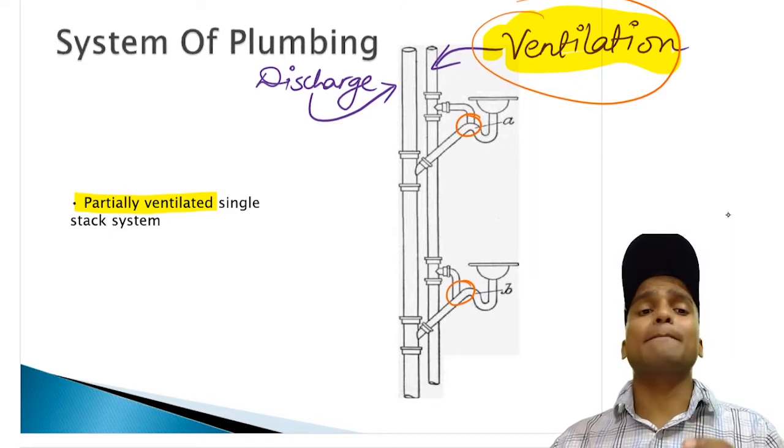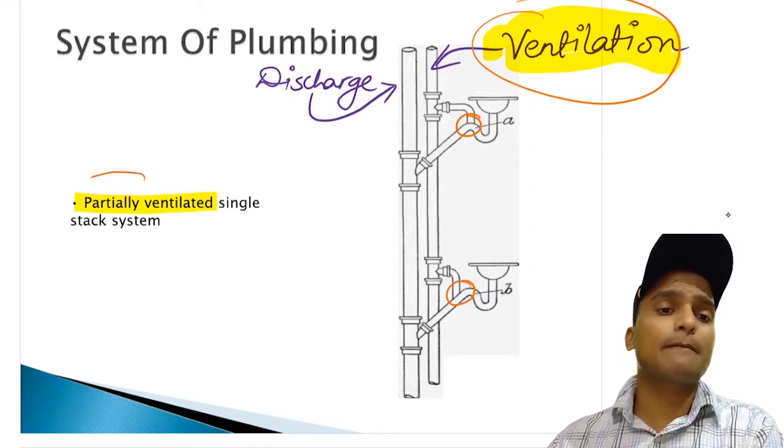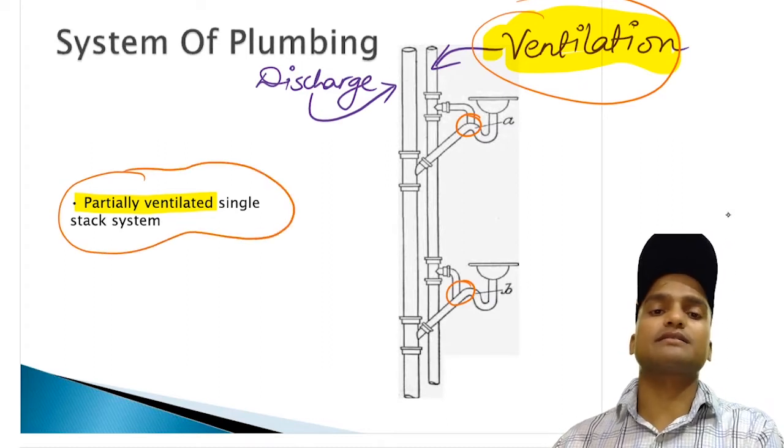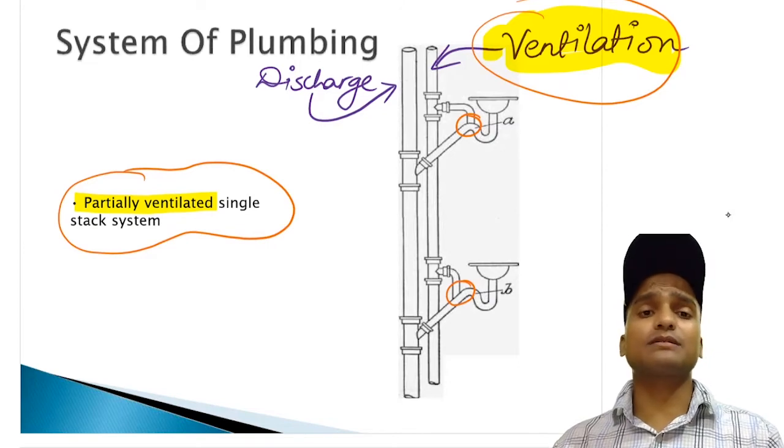Unlike the one pipe system in which the wash basin, sink, bath tubs, everything was connected with the ventilation stack, this is the basic difference between this system of plumbing and that's why it is said as partially ventilated single stack system. But overall, we are going to use two separate pipes into this system of plumbing.